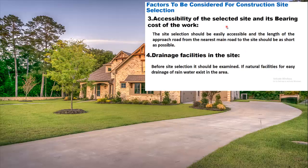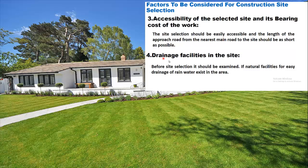The third factor is accessibility of the selected site and its bearing cost. The site should be easily accessible and the length of the approach road from the nearest main road to the site should be as short as possible. Also, drainage facilities at the site should be examined — it should be confirmed whether natural facilities for easy drainage of rainwater exist in the area.